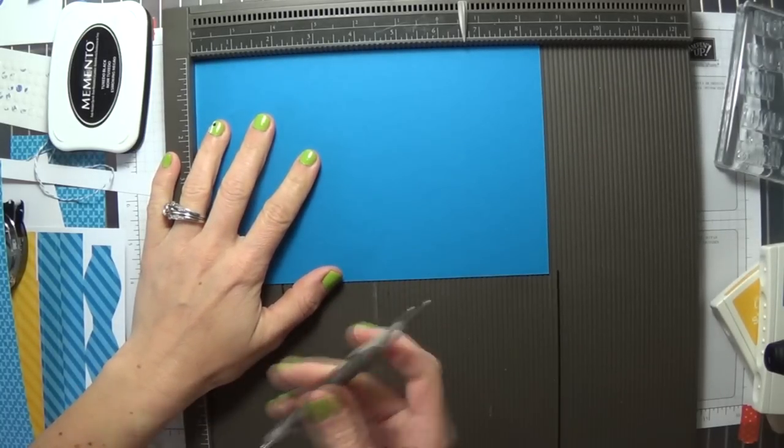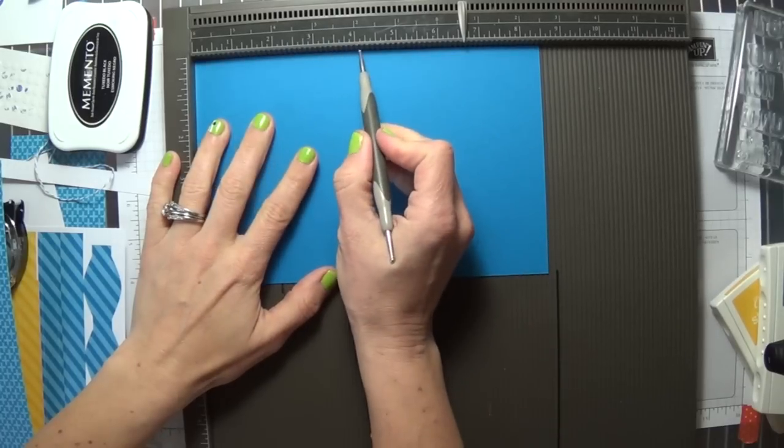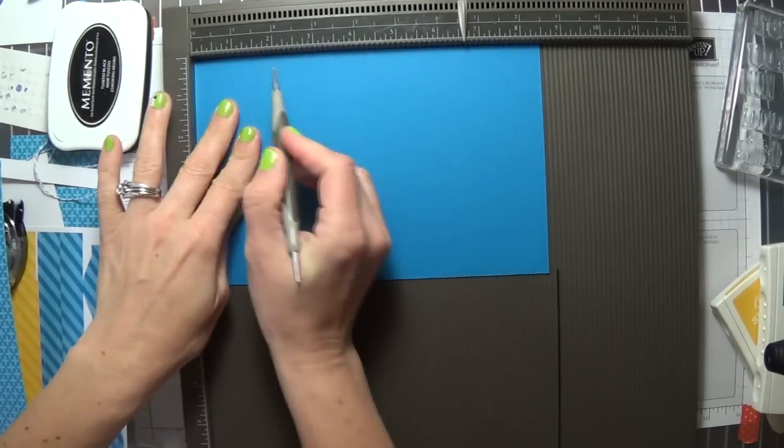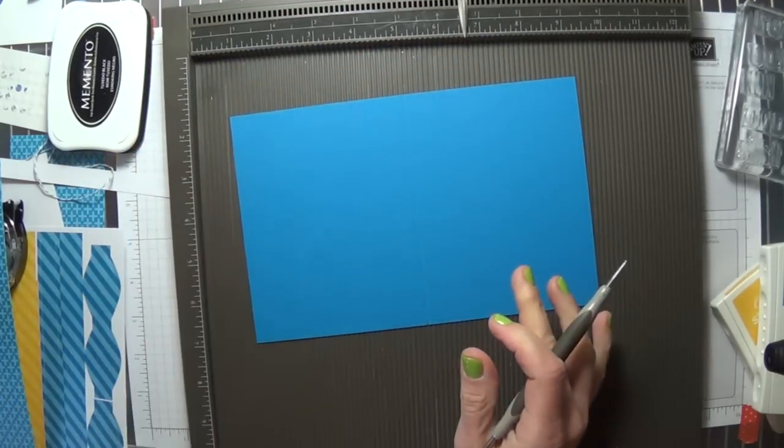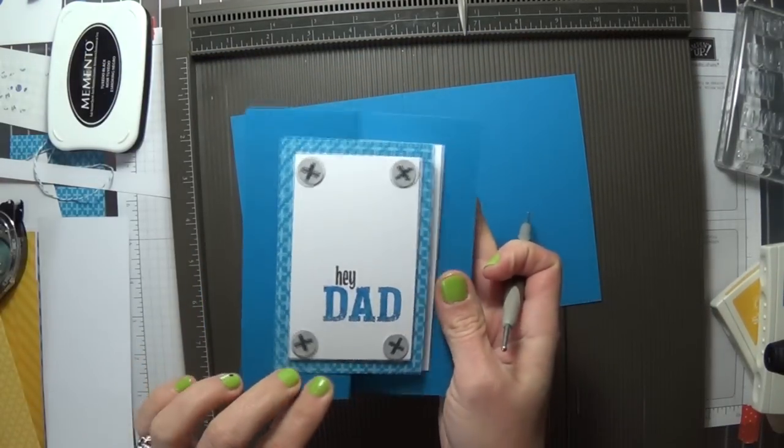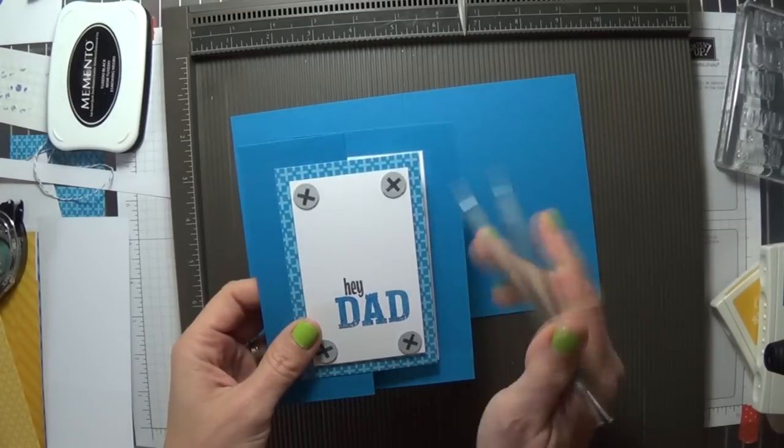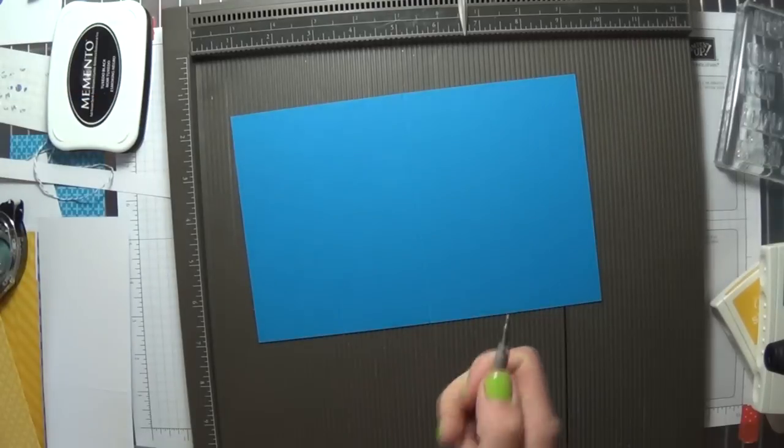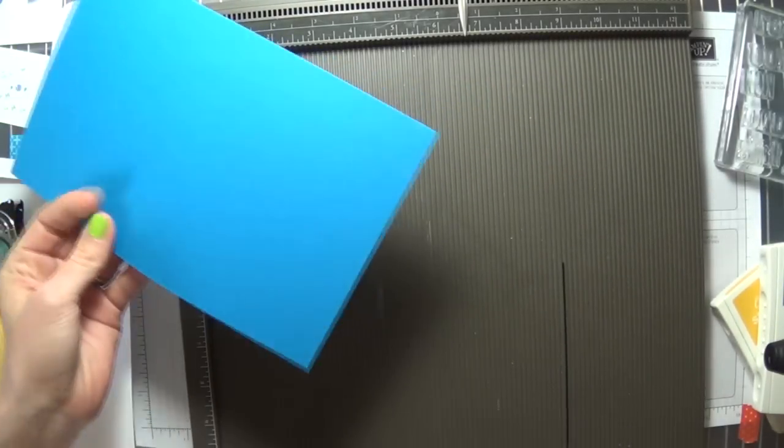I'm going to start today with an eight and a half by five and a half piece of cardstock and I'm going to score it at four and a quarter and two and an eighth. This is going to allow me to make this card right here. You can see how it opens. I'm using pieces from the April Paper Pumpkin Kit and that is the first step in making the card base.